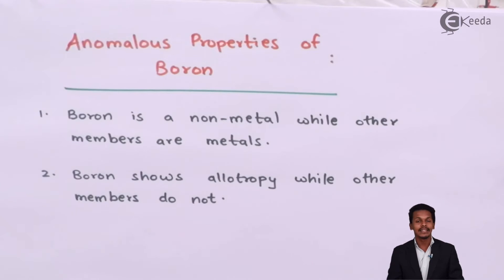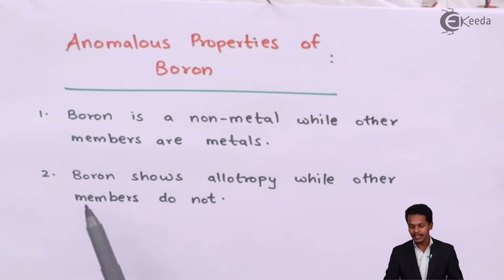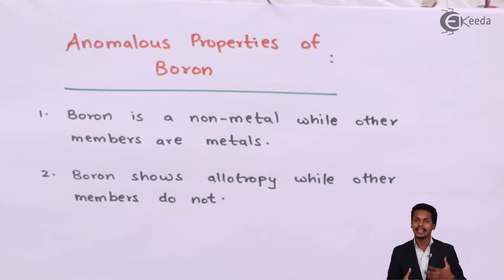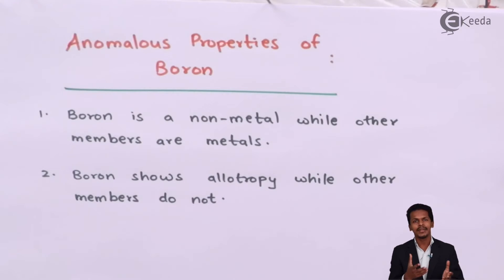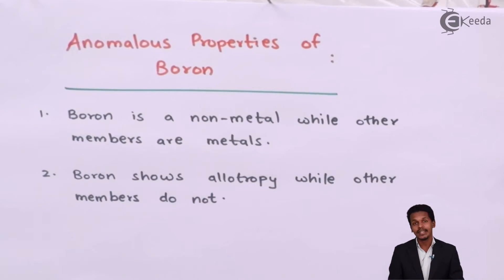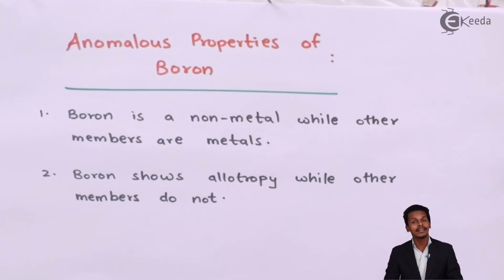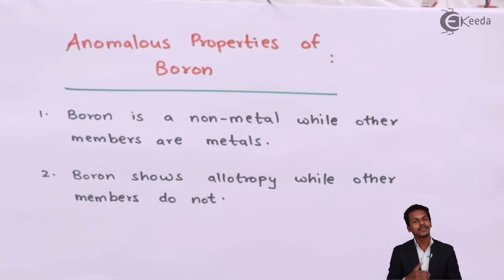Aluminum, gallium, and thallium all have metallic character. The second point is that boron shows allotropy while the other members do not. Boron can exist in a crystalline form or an amorphous form. Crystalline boron does not react easily with oxygen, while amorphous boron reacts with oxygen to form boron oxide. The other group 13 elements do not exhibit allotropy.